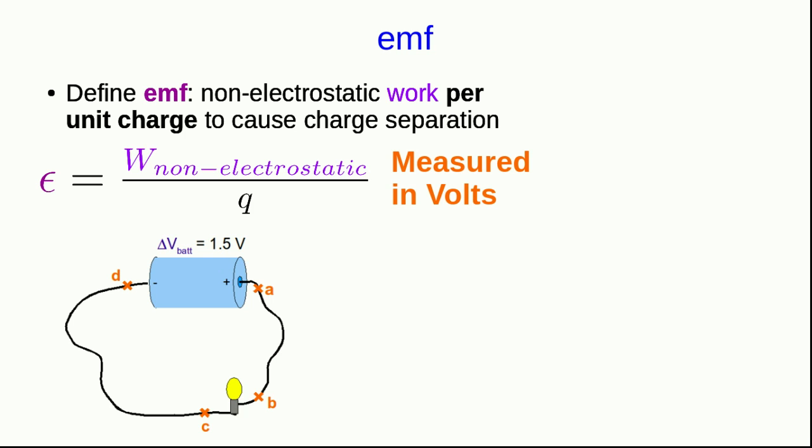And so notice that it's measured in volts, because it's again joules per coulomb, just like a potential difference. And so if we have a battery bringing charge up a potential difference of 1.5 volts, then if it's an ideal battery, its EMF would be 1.5 volts.